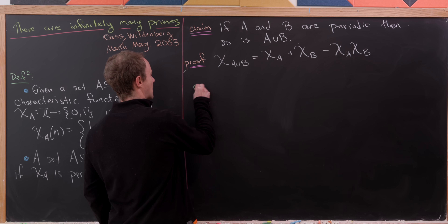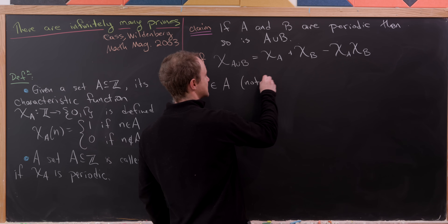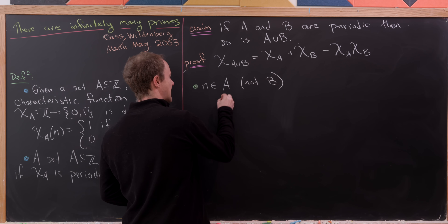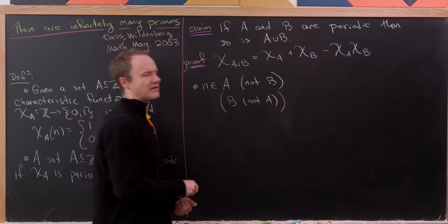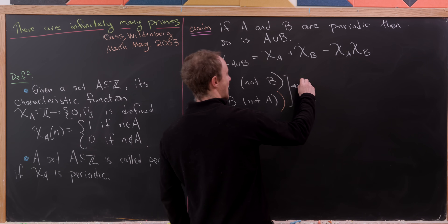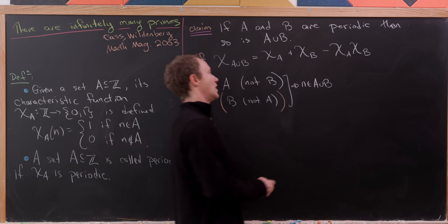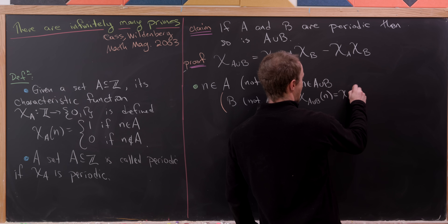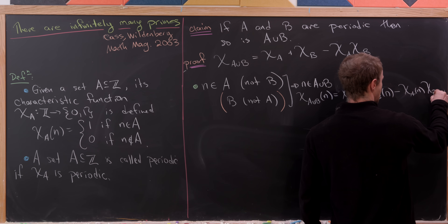I claim that chi(A ∪ B) is simply equal to chi_A plus chi_B minus chi_A times chi_B. Let's verify this. Our first case is when n is an element of A but not B — and by symmetry, this is parallel to the case where n is in B but not A. In this case n is in A ∪ B, so we should get 1. We have chi_A(n) + chi_B(n) − chi_A(n)·chi_B(n), which is either 1+0−1·0 or 0+1−0·1, giving 1 either way.